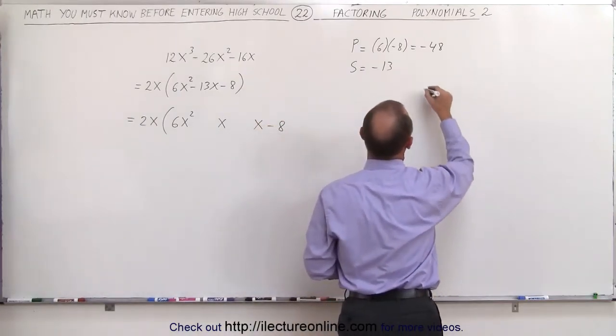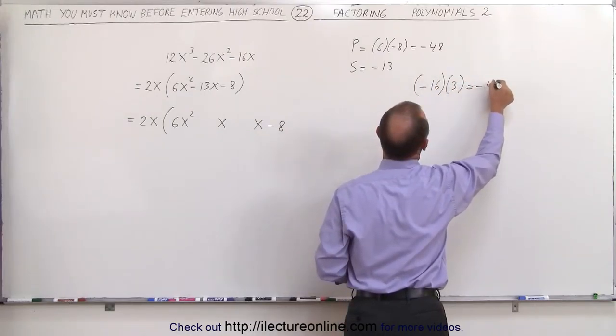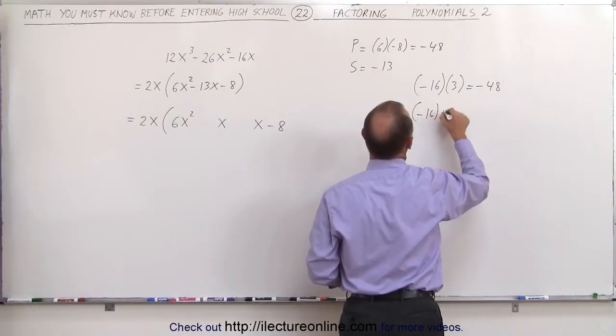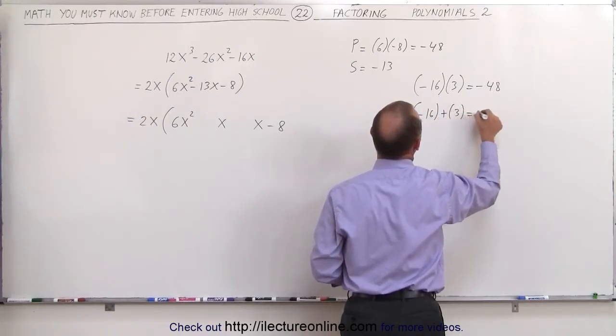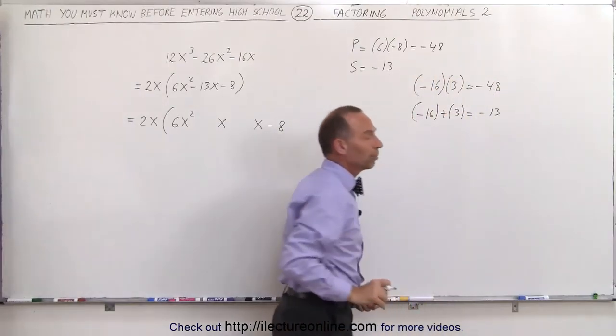Yes, I think that will work. A minus 16 times a plus 3 will give us minus 48. And when I add them together, minus 16 plus a positive 3 gives us minus 13. So minus 16 and minus 13. These are the two numbers.